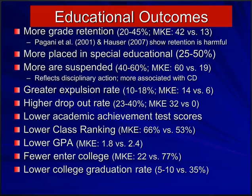Even those who completed education often performed well below our control group — in terms of class ranking, grade point average (approximately D+ to C- for the ADHD group versus C+ to B- for controls), and rates of entering and graduating college. Very few of the ADHD children entered college, and even fewer graduated college relative to the general population or our control group. ADHD results in individuals being less educated by the time they reach adulthood than individuals from similar backgrounds, neighborhoods, and schools.